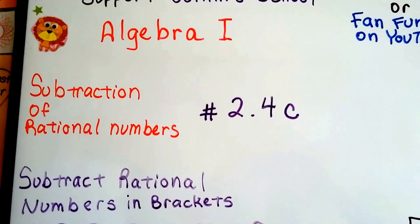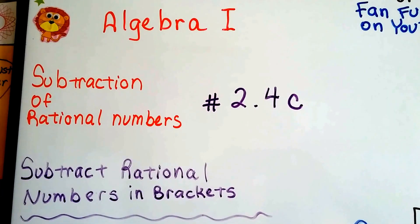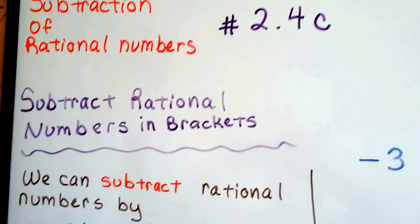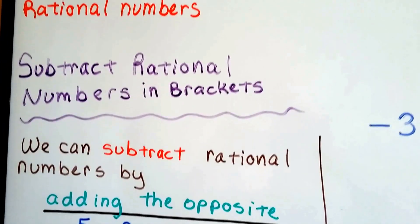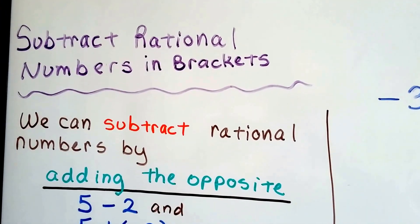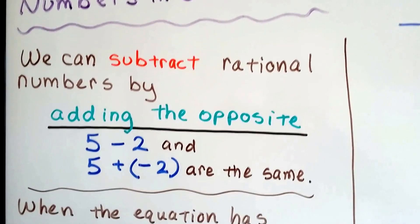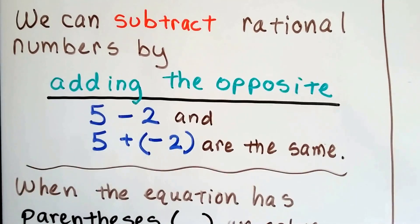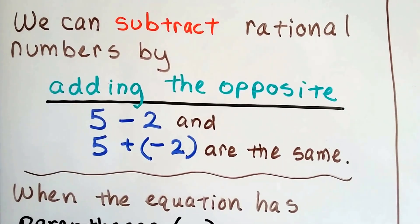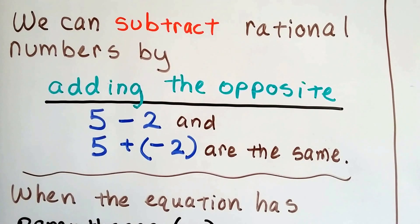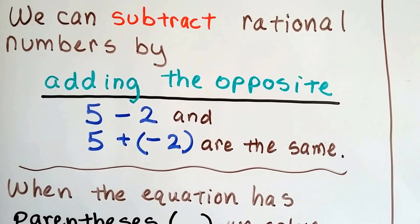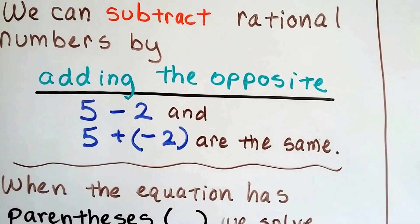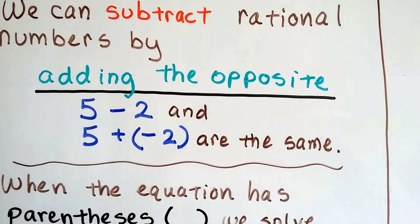Algebra 1, number 2.4c. We're still talking about subtraction of rational numbers — now subtracting rational numbers that are in brackets, braces, or parentheses. We can subtract rational numbers by adding the opposite, which we learned in the last video. For example, 5 minus a positive 2 is the same thing as 5 plus a negative 2.